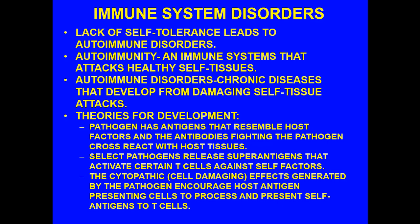One theory is that a pathogen has antigens that resemble host factors, and antibodies fighting the pathogen cross-react with host tissues. A second theory is that select pathogens release superantigens that activate certain T cells against cell factors. A third theory — the cytopathic theory — holds that cell-damaging effects generated by the pathogen encourage host antigen-presenting cells to process and present self-antigens to T cells. These theories attempt to explain how a mature immune system can be tricked into going after self-tissues.